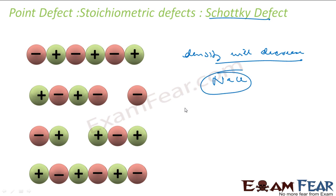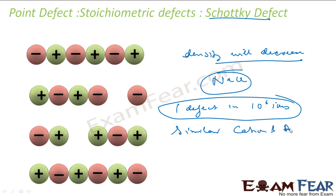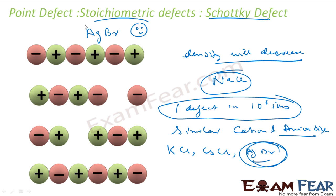In NaCl we have almost one Schottky defect, one defect in 10 to the power 6 ions. That is the experimental value. It is generally shown by substances which have similar cation and anion size. The last defect was not shown by NaCl, but this defect is shown by NaCl. Other examples are potassium chloride KCl, AgBr, etc. Please note, AgBr shows both defects. This is something special. AgBr is special, this special kind. It shows both the defects: Schottky defect and Frenkel defect.